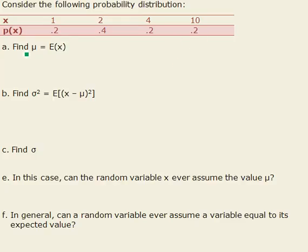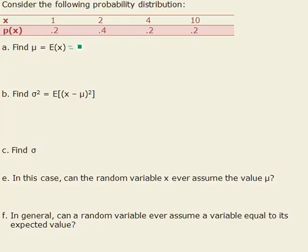Now the first question asks us to find mu, which they say also equals our expected value E of x, but that also equals in formula terms the sum of x times the probability of x. Well the sum of x's times the probability of x's would be 1 times .2